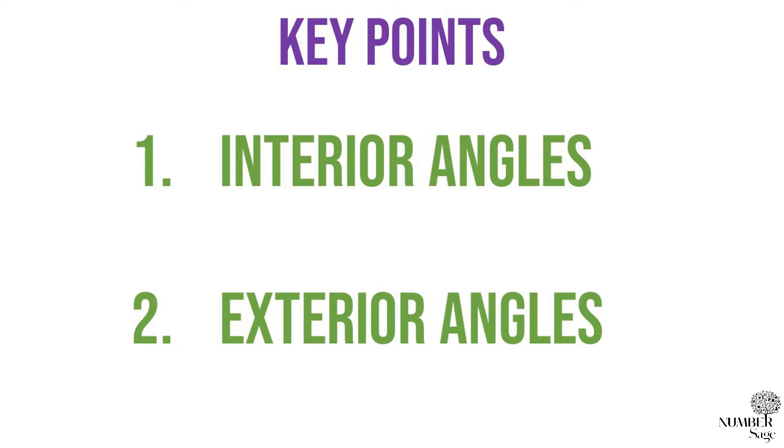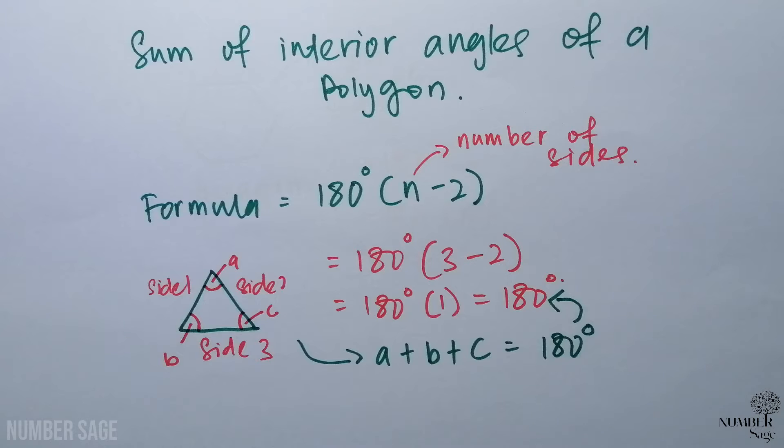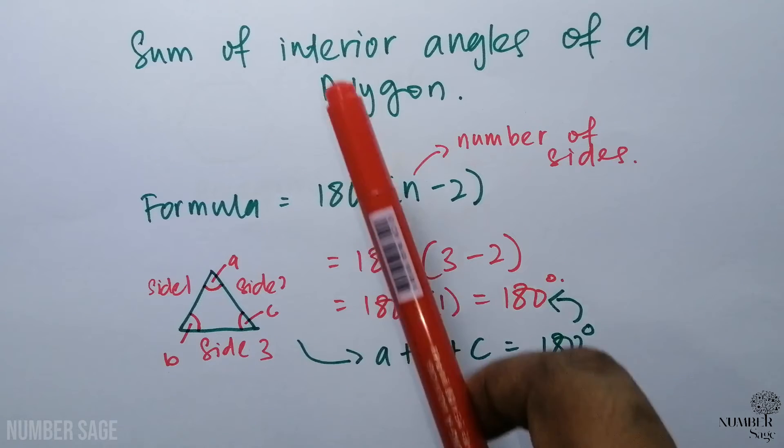The first one will be the interior angle and the second one will be the exterior angle of the polygon. Let's look at that. The first one is the interior angles of a polygon.